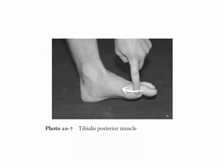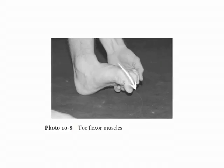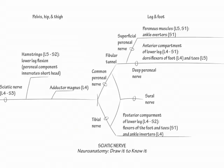Finally, curl your toes to demonstrate the action of the toe flexors. When evaluating foot drop, try to determine if the deficit fits a peroneal or a tibial distribution. If it does not categorize into either peripheral nerve pattern, consider either a sciatic nerve injury, a lumbosacral plexus injury, or root disease.